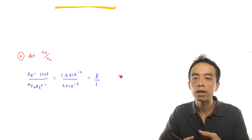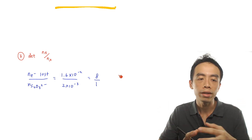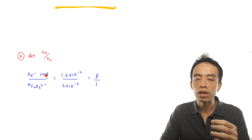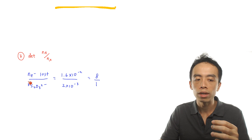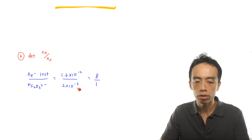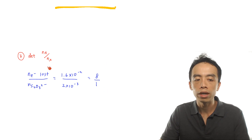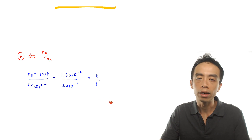Step three: find the mole ratio of electrons lost to moles of thiosulfate. That is (1.6 × 10⁻²) / (2 × 10⁻³) = 8/1. So the mole ratio of electrons lost to thiosulfate is 8:1.